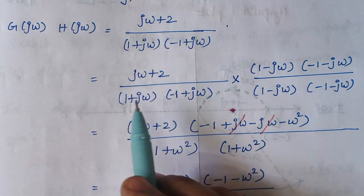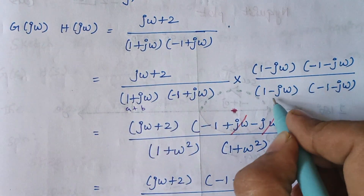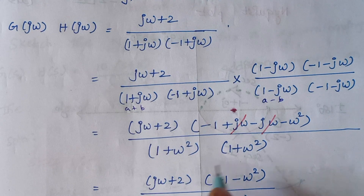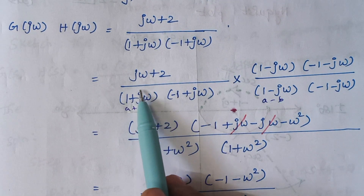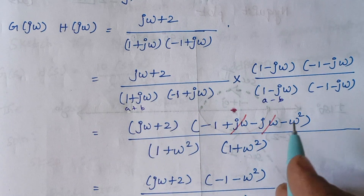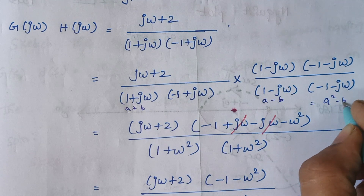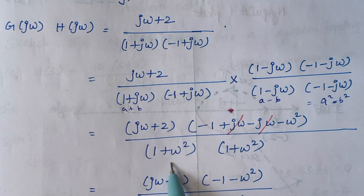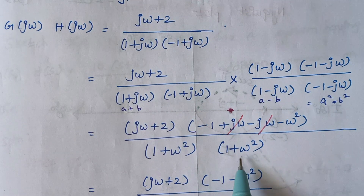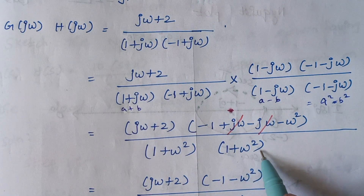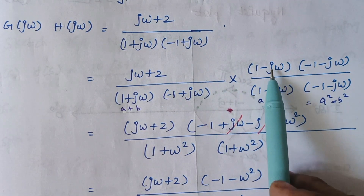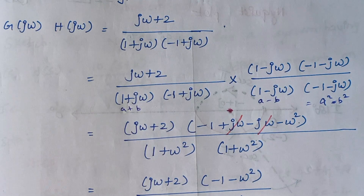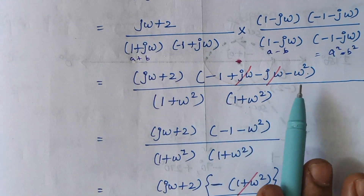The denominator terms are of the format a plus b and a minus b, so this becomes a squared minus b squared. Here a squared is 1, and b squared: jω whole square gives minus ω squared. With the formula's minus sign, minus into minus ω squared becomes plus ω squared. Similarly combining both denominator terms gives 1 plus ω squared. For the numerator terms being multiplied, the plus jω and minus jω terms cancel each other.